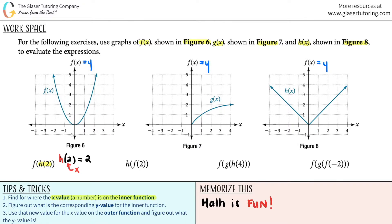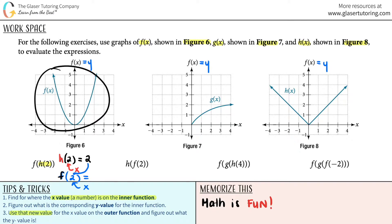Now we're ready to move on to the outer function, which is f. What am I going to plug in? It's the answer to what you just solved — use that new value, the 2 in this case, as the x on the outer function and figure out what the y is. So I plug 2 in, and now it becomes an x value. I go to the f graph, x equals 2 is right here, I go all the way up to where it touches the graph. The corresponding y value is 4. And that is your final answer, since f is the last function.